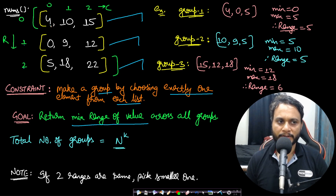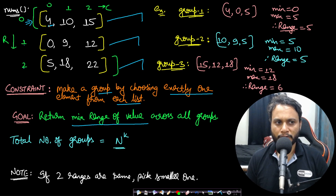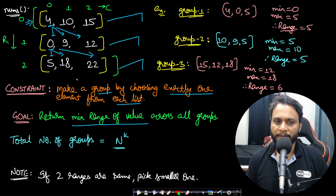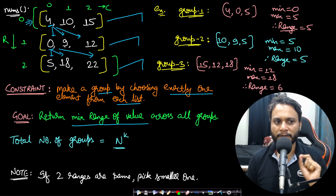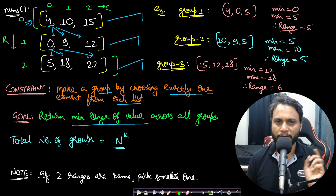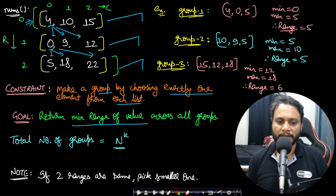If you start forming groups, for the first list you can choose 4, and from the next list you can pick 0, 9, or 12, and from the third list you can pick 5, 18, or 22. So even for 4, you can form groups like [4,0,5], [4,0,18], [4,0,22], [4,9,5], [4,9,18], [4,9,22], and so on. The total number of groups you can make is n to the power of k, because each item has n choices and there are k lists.